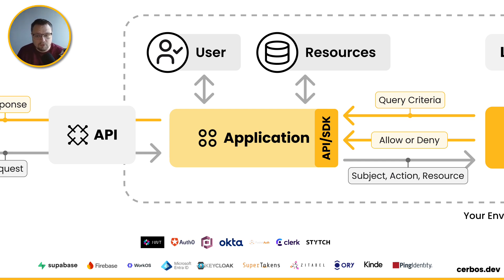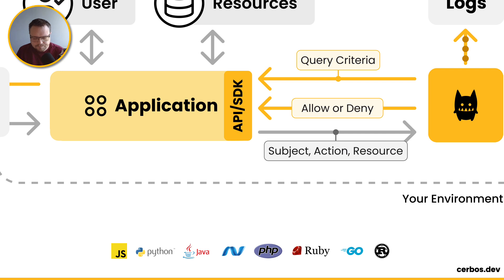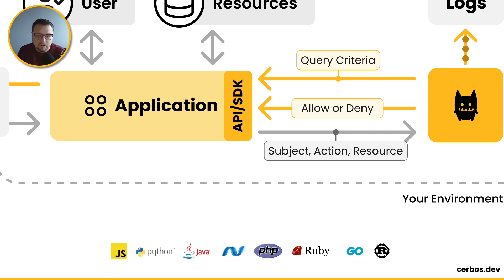The SERBOS approach here is to decouple or externalize all that authorization logic out into a policy decision point, of which SERBOS is one of those. So in your application, you implement the SERBOS SDK, or you can even call the API directly. We have SDKs for pretty much every language that's commonly used out there today, but you can always just use the API underneath. And in your application code, at the point when you do those permission checks, rather than having all that hard-coded logic, you just make a call out to the SERBOS decision point running alongside the application.